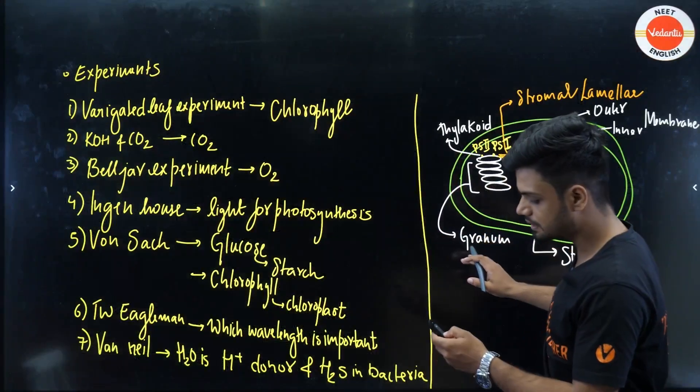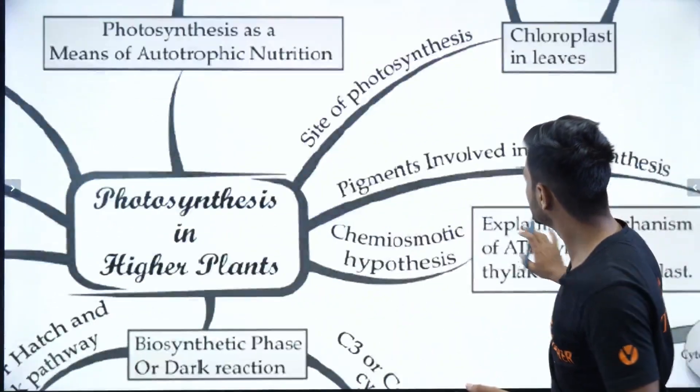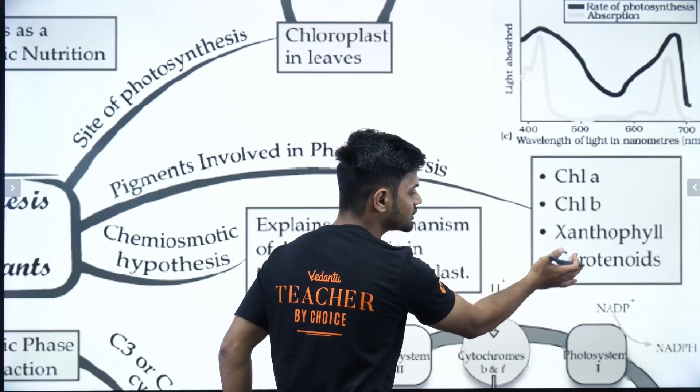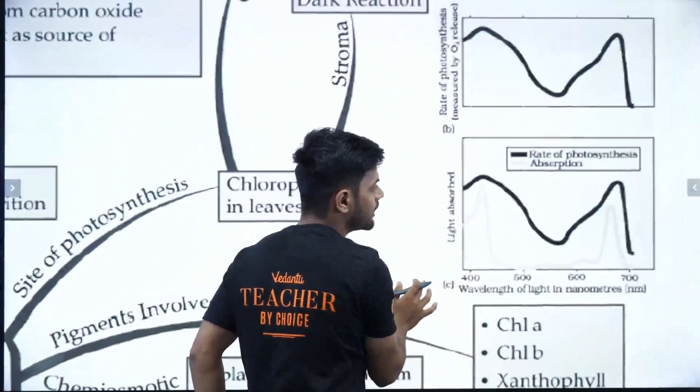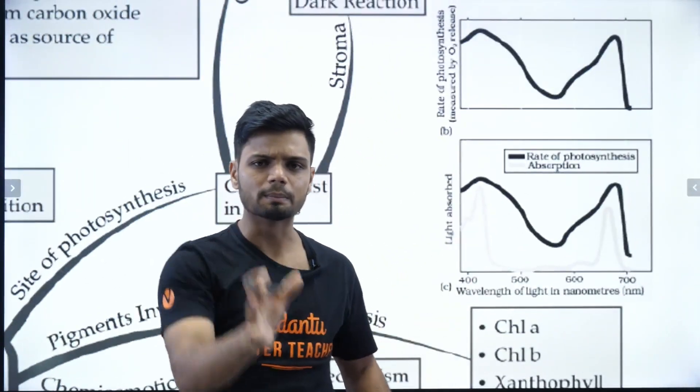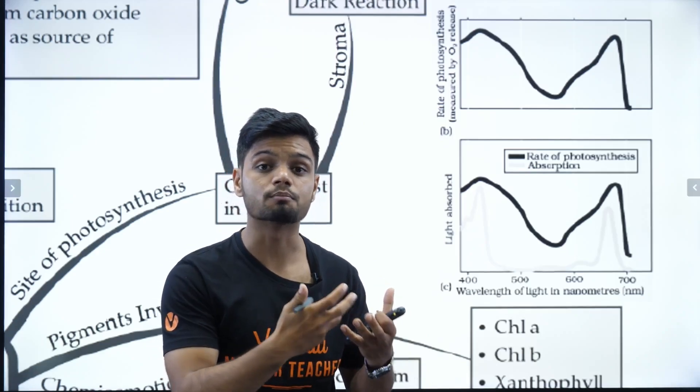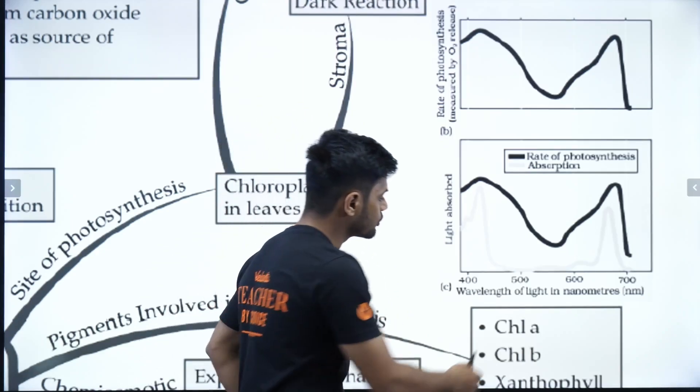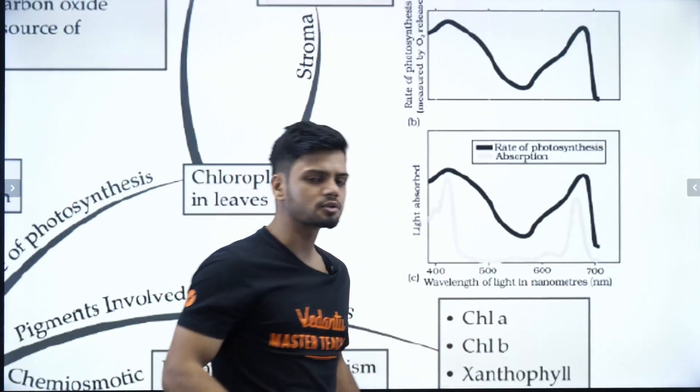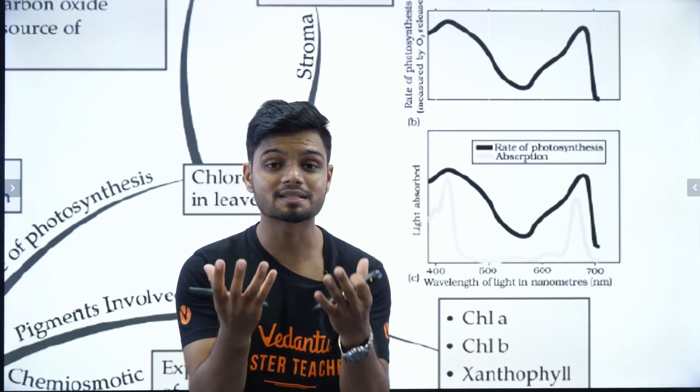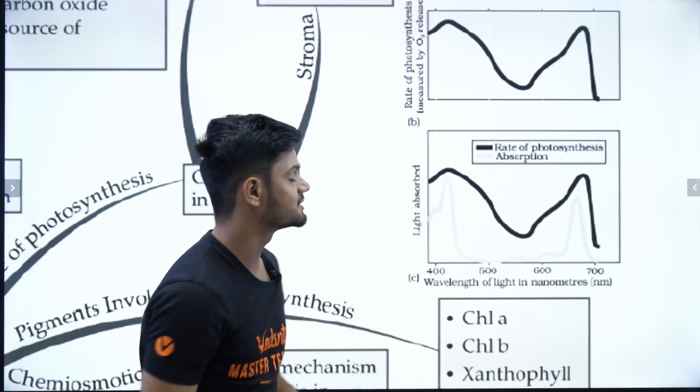Now, we go to the pigments. Let's understand different pigments here. Pigments involved, we have chlorophyll A, universal pigment, chlorophyll B, xanthophyll and carotenoids. Now, let's understand, based on the pigments, we have two spectrums. That is action spectrum and absorption spectrum. The first one is absorption spectrum. The absorption spectrum tells us at what wavelength which particular pigment is getting absorbed.